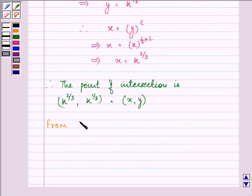From the first equation, we get x equals y squared. Differentiating this equation with respect to x, we have 1 equals 2y dy/dx.